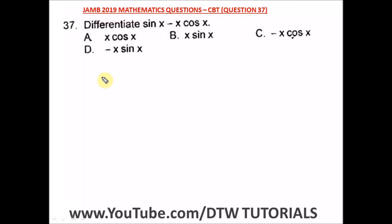Question 37 of the JAMB 2019 mathematics past question — that's your UTME CBT exam. It says differentiate sine x minus x cos x. So how do we do this? You can see this is sine x, then a negative, then x cos x. It's easy to differentiate sine x alone, but when you see x cos x, that requires the product rule.